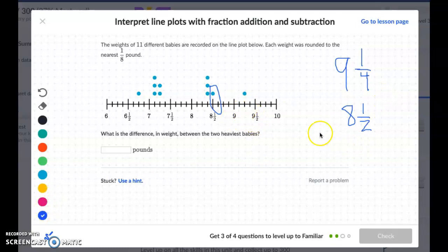So now we have to go ahead and subtract those because it wants to know the difference in weight. So I'm going to go ahead and make my common denominators. I'm going to make this out of 4. So 2 times 2 is 4. 1 times 2 is 2.